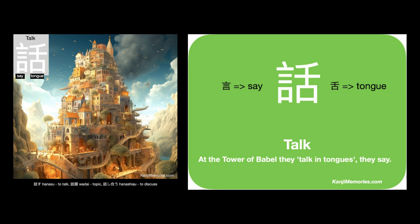We put the two cards together and look at the suggested association on the green card: at the Tower of Babel they talk in tongues, they say. We need to associate 'say' on the left with 'tongue' on the right to give us the word 'talk'. At the Tower of Babel they talk in tongues, they say. Now whenever you see people chatting enthusiastically in Japanese, you can think of the Tower of Babel.